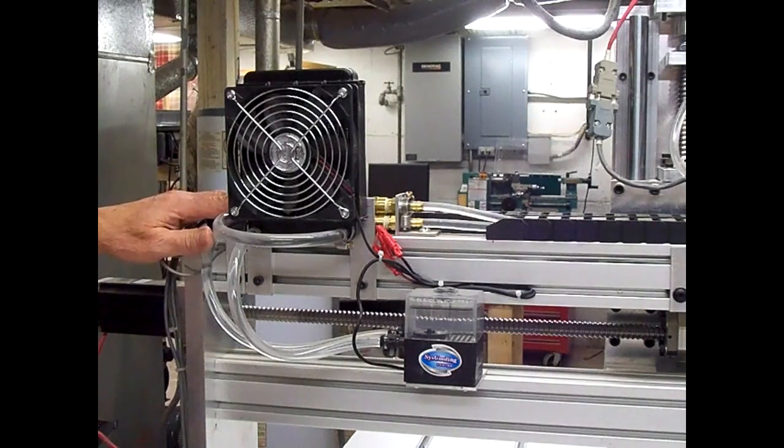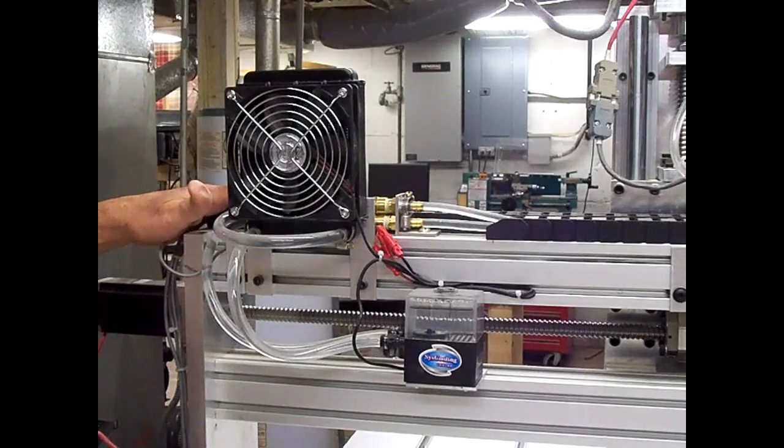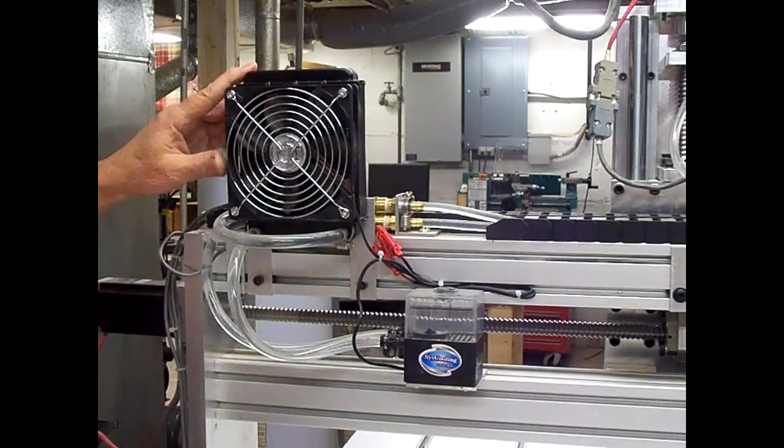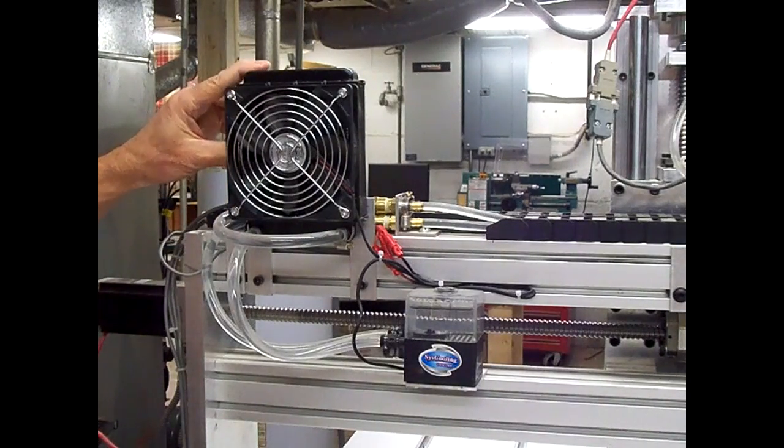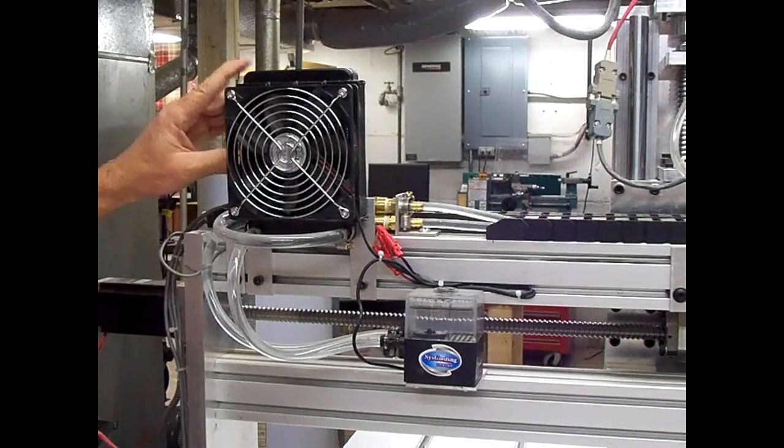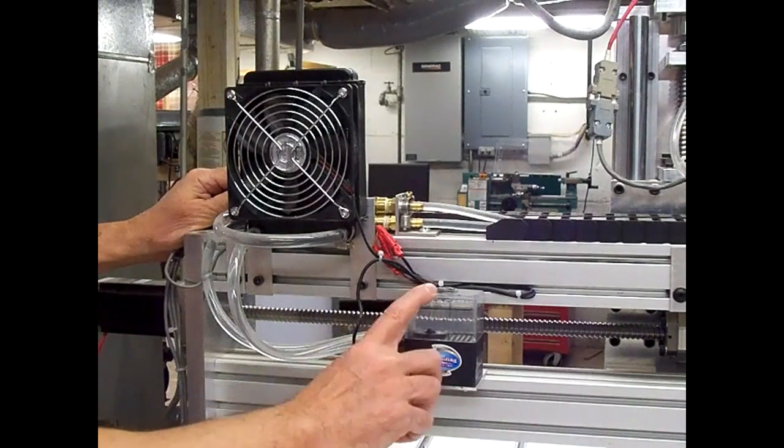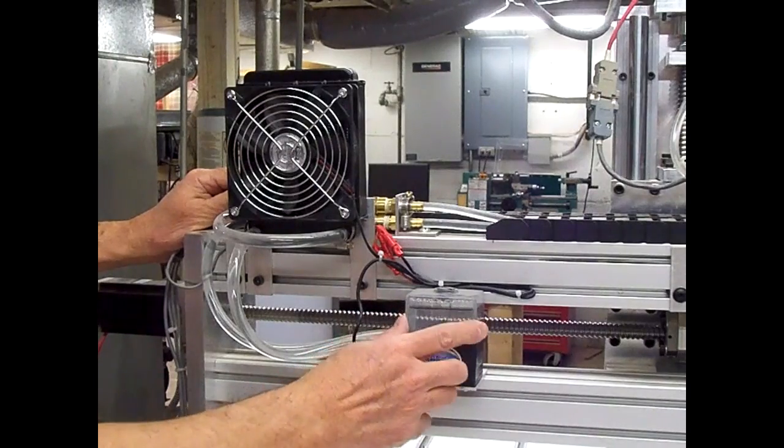This is the cooling unit I bought for the CNC router. It consists of a heat exchanger which acts like a little radiator and a small pump that contains a reservoir for the water.